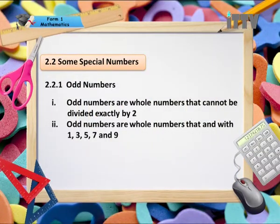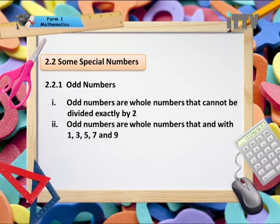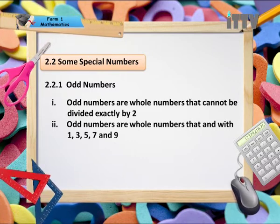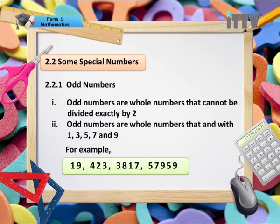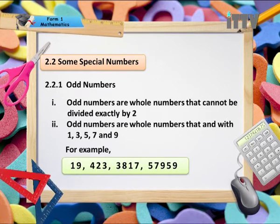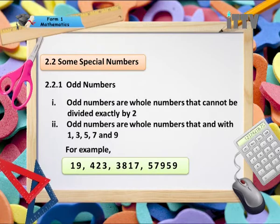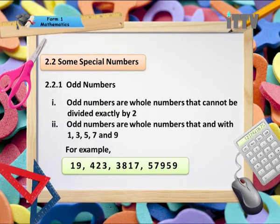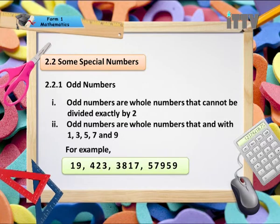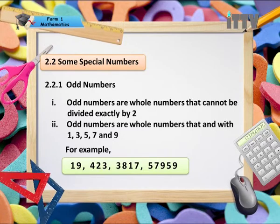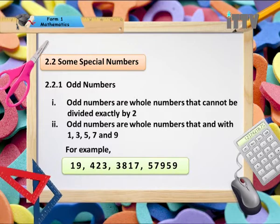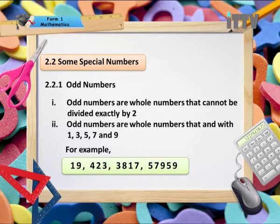Odd numbers are whole numbers that end with 1, 3, 5, 7, and 9. For example: 19; 423, which ends with a 3; 3,817, which ends with a 7; and 5,7959, which ends with a 9. These are all odd numbers.